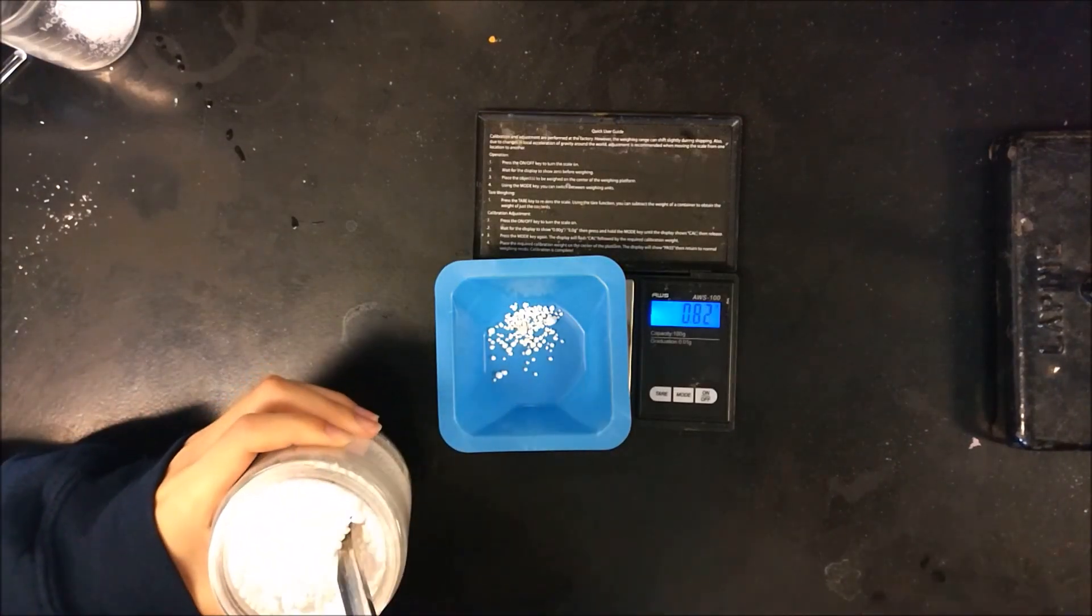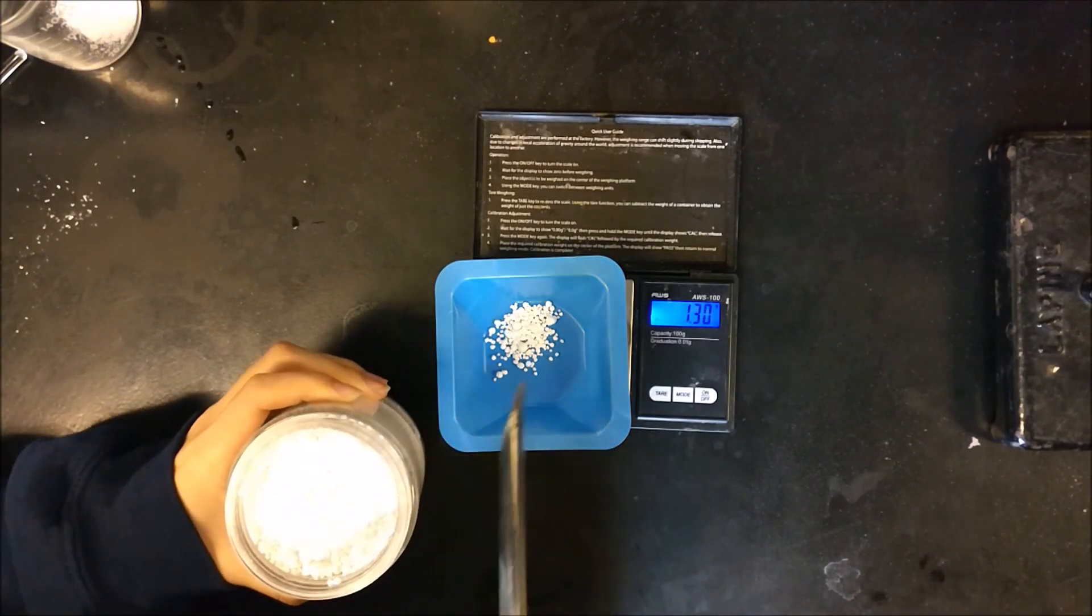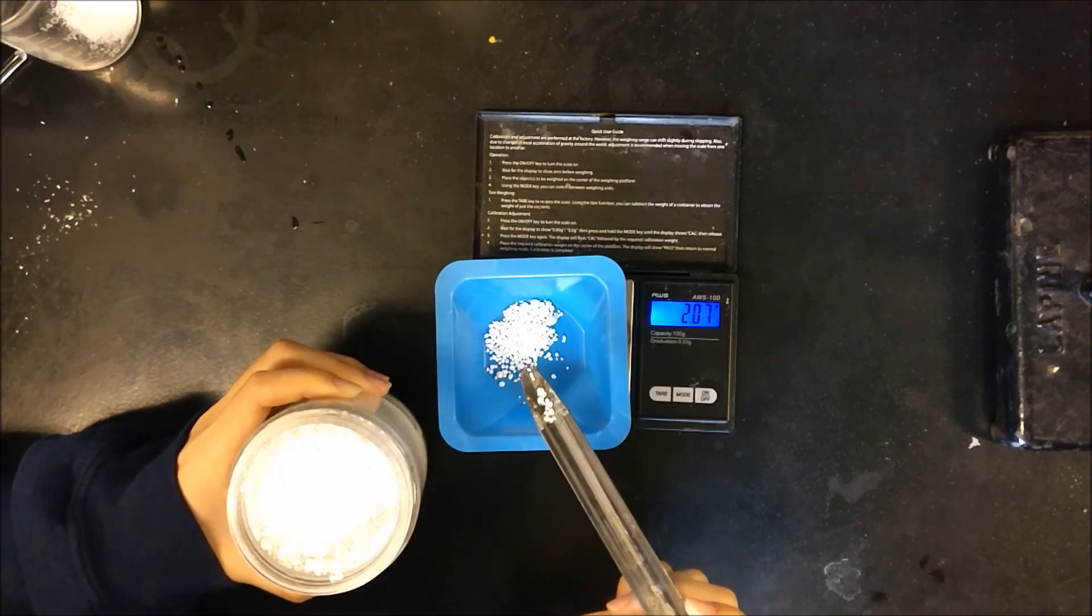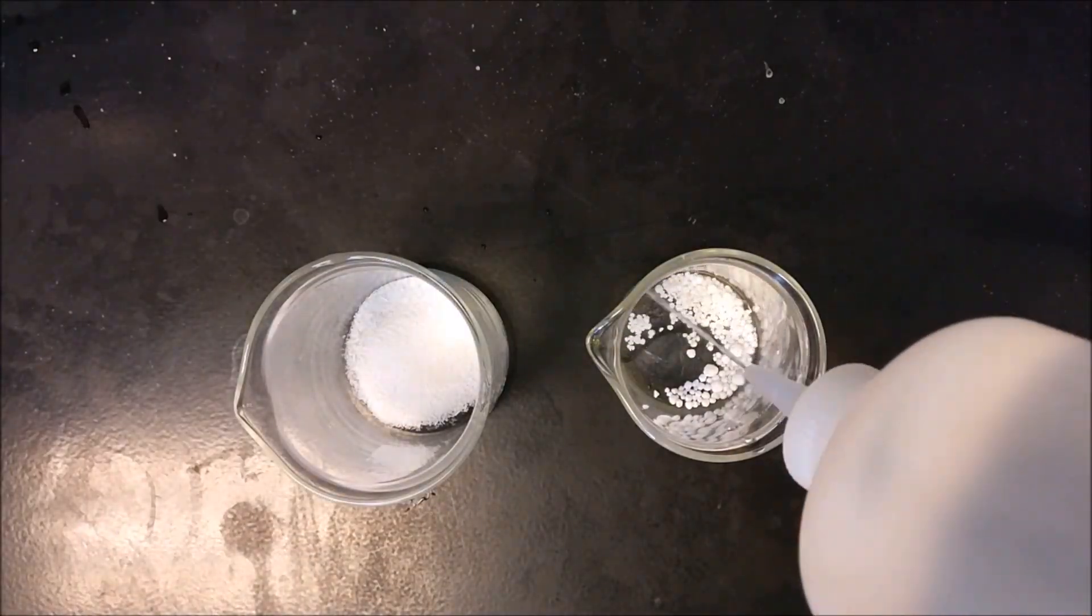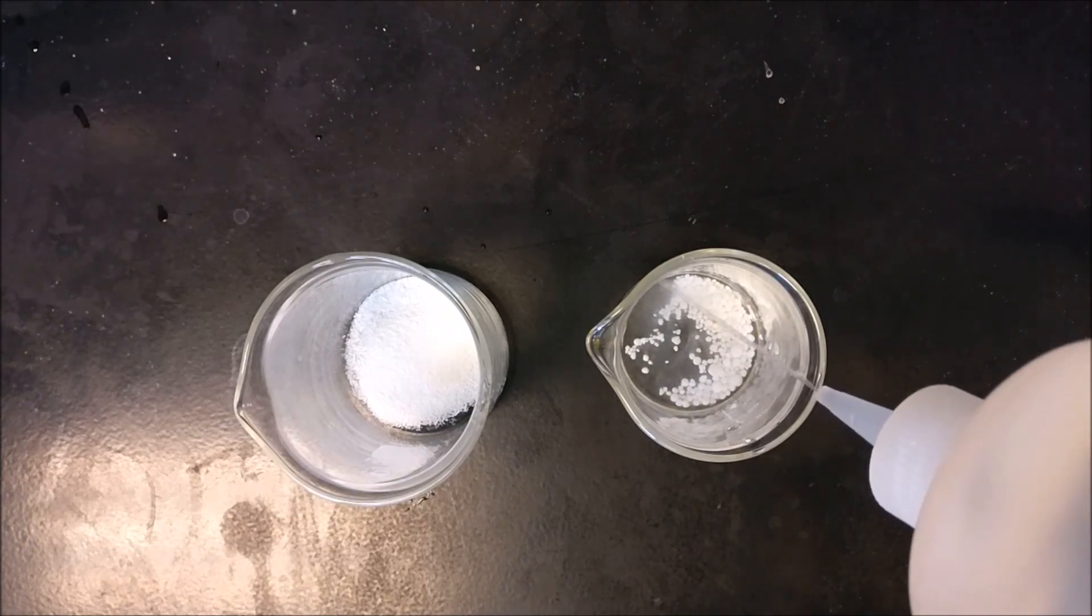Now, use the scale to measure around 2 grams of the unknown calcium halide and add it to the other beaker. Add around 30 ml of water to each beaker.